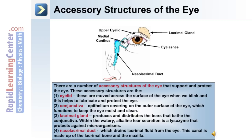To support the eye, there are a number of accessory structures in the visual system: the lacrimal gland, upper and lower eyelids, eyelashes, and the nasolacrimal duct. The eyelids are moved across the surface of the eye during blinking to lubricate and protect the eye. The conjunctiva is an epithelial covering on the outer surface of the eye that keeps the eye moist and clean. The lacrimal gland produces and distributes tears that bathe the conjunctiva; within the watery alkaline tear secretion is a lysozyme that protects against microorganisms. The nasolacrimal duct drains lacrimal fluid from the eye and is formed by the lacrimal bone and the maxilla bone.